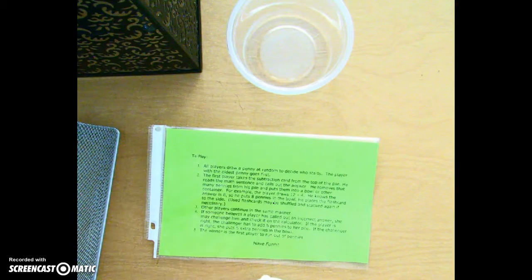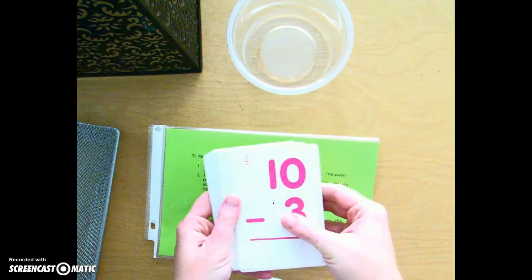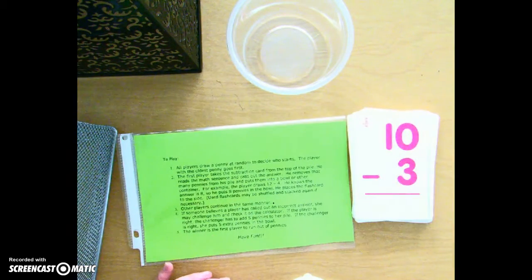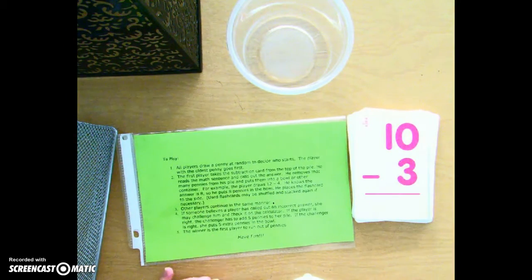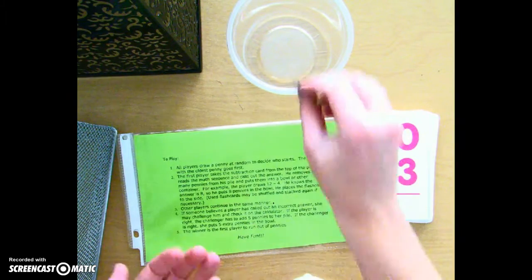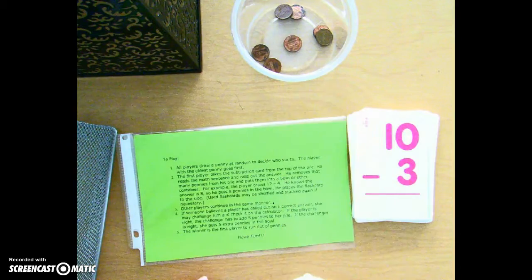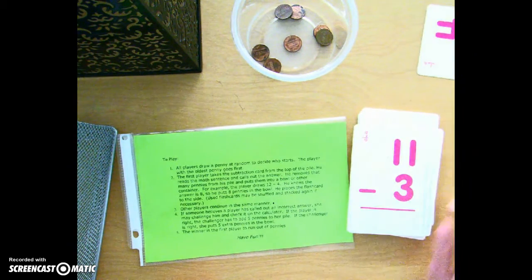Everybody takes turns answering a subtraction flashcard. 10 minus 3 is 7, so I find 7 pennies: 4, 5, 6, 7. Then everybody takes turns.